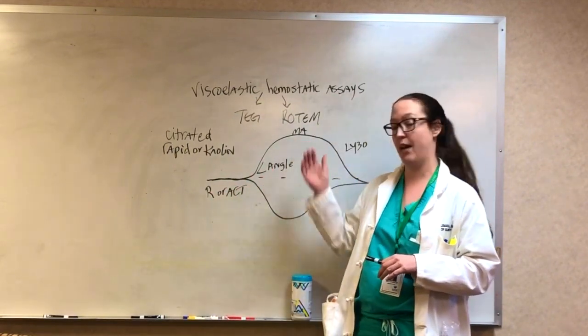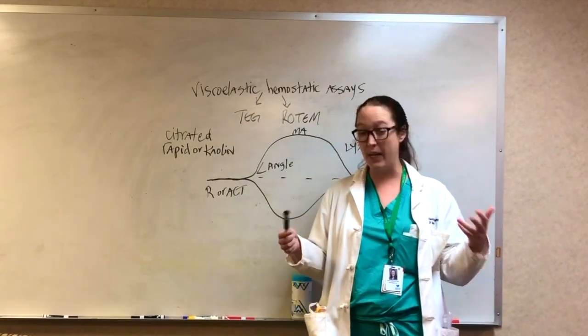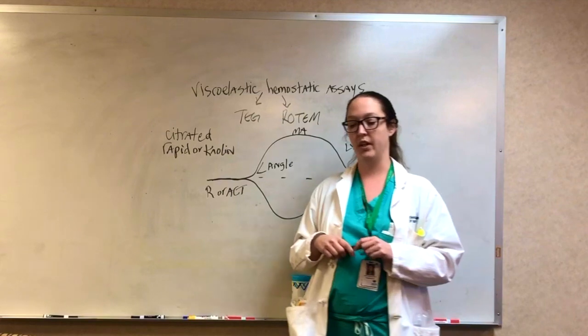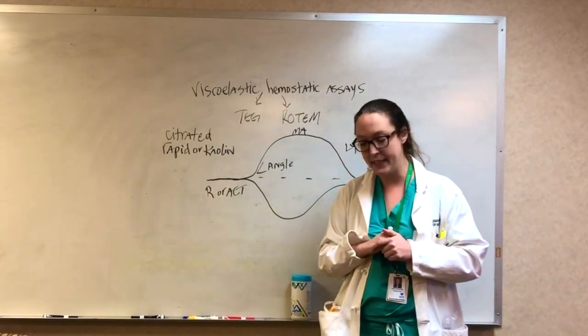Thirdly, you care about MA, maximum amplitude. This is maximal clot strength, which is an effect mainly of platelets and is an effect of platelet and fibrin cross-linking and binding.